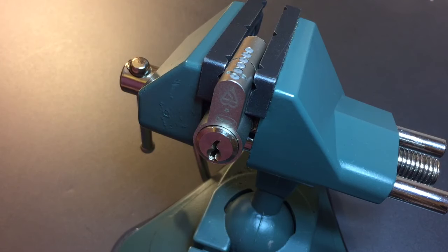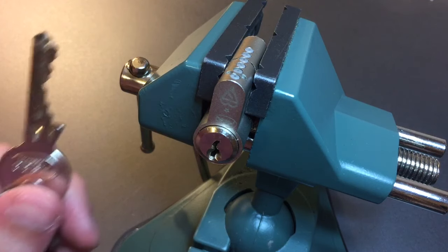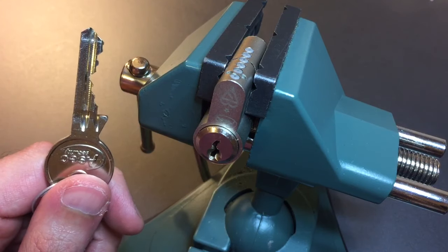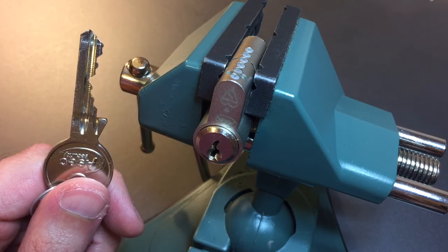This is the Lockpicking Lawyer and the lock I have for you today is an ASIC Euro profile cylinder. This lock has a Yale style keyway, six pins and as you can see from this key some pretty good-looking bitting.